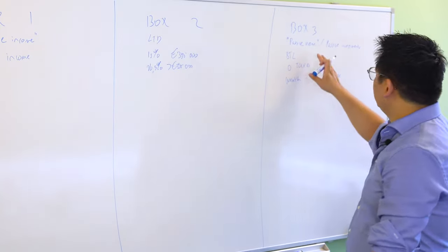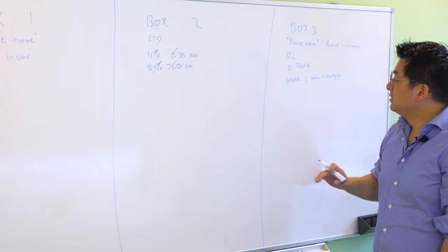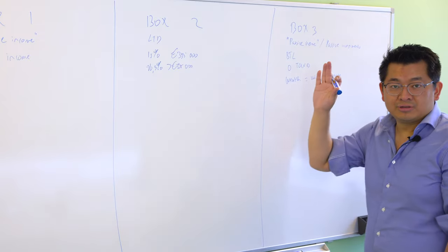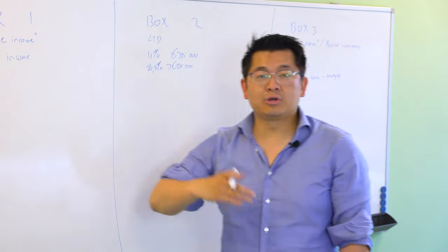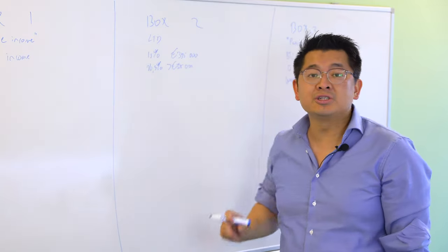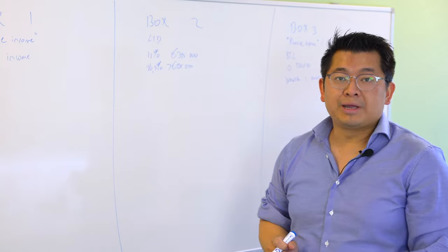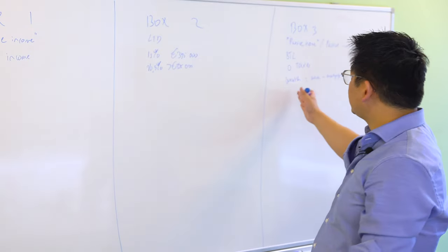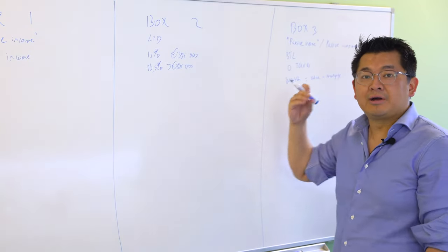In box three you have different brackets. If you're going above 100,000 euros in wealth in the box three calculations, you will end up paying a bit of tax. But because I own real estate, I don't pay tax.